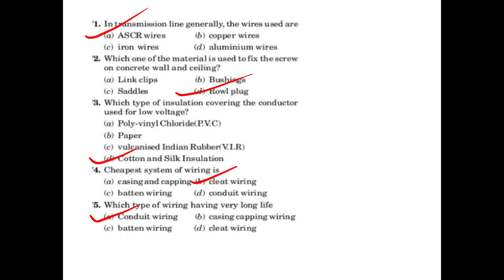Which material is used to fix the screw on the concrete wall and ceiling? This material is used to fix the screw on concrete walls and ceilings. The answer is rawl plug — it is used as a rawl plug.